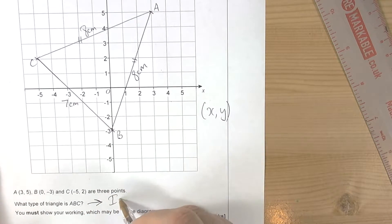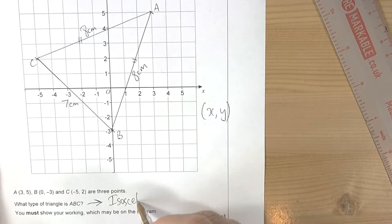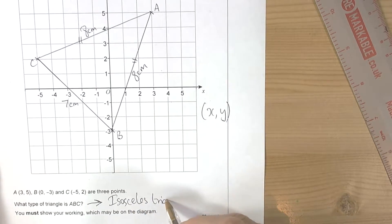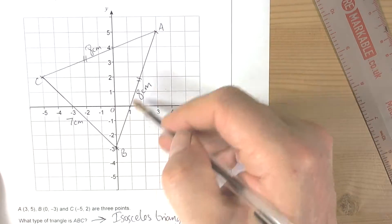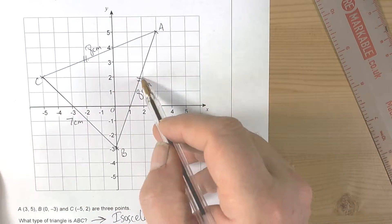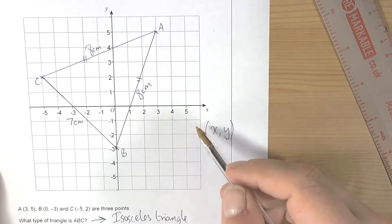We've done the measuring of lengths, we've shown these two are equal, and therefore it must be an isosceles triangle.